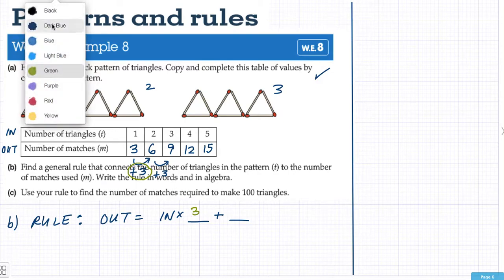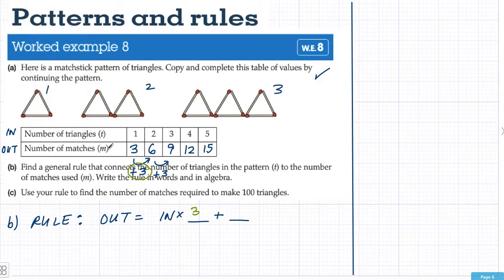Now, instead of talking about in and out, we can actually use the variables that they gave us. The t in place of in and the m in place of out. m equals t times three. Or using your rules, m equals, remember the number at the front. And then you don't need to write the multiplication sign. So it's just three t. m equals three times t or m equals three t.